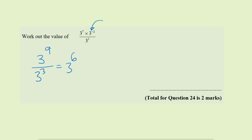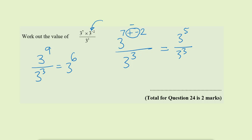There's another mistake on this question too — I'll correct the first one first. Because there's a negative, we work out 3 to the power of 7 adding negative 2, which gives 3 to the power of 5, over 3 cubed. Since we're dividing, 5 take away 3 gives 3 to the power of 2. Now a lot of students leave it as 3 to the power of 2, but the question asks us to work out the value — do not leave it as a single power of 3. So 3 squared is 3 times 3, which is 9.